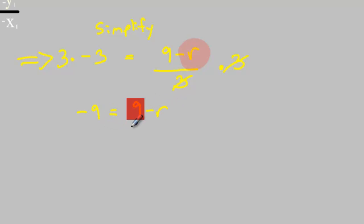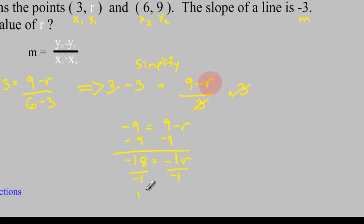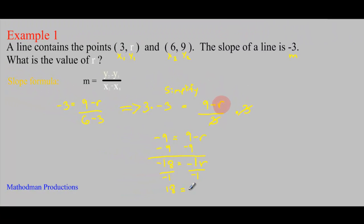It's a two-step equation from here, so let's get rid of this 9 by subtracting a 9 to both sides. I'm left with negative 18 on the left and a negative r on the right. Negative r is the same as negative 1r, so get rid of the negative 1 by dividing by negative 1 on both sides. You get 18 equals r, and now your problem is solved.